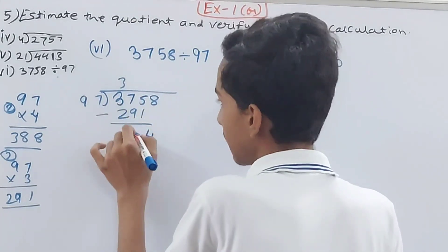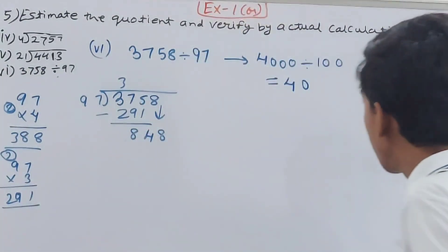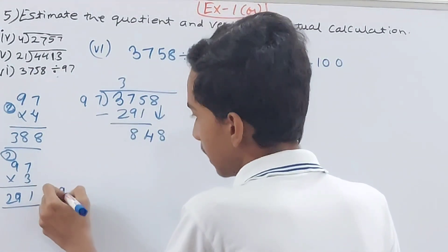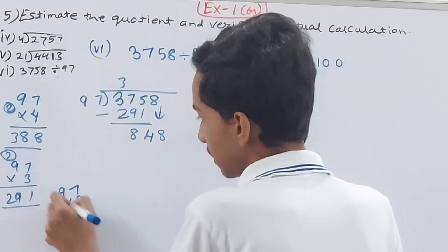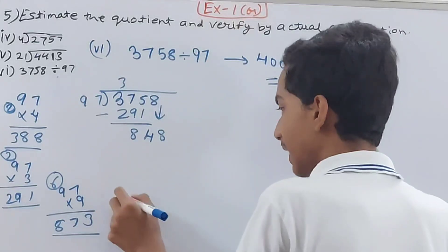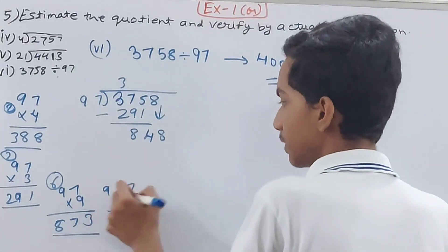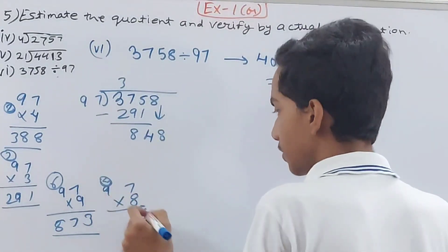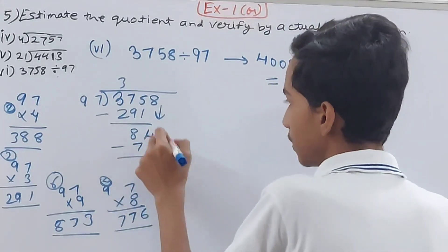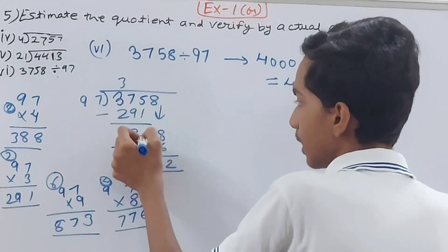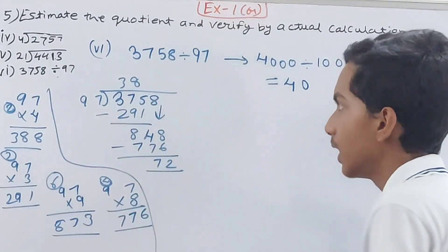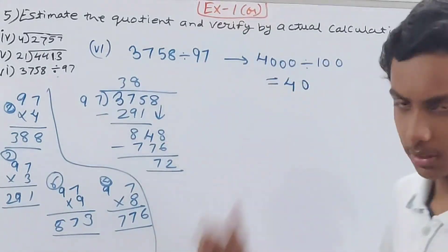So try 8 times — 8 sevens are 56 carried over 5, 8 nines are 72 plus 5 is 77, giving 776. Minus 776 from 848, remainder 72. 72 is less than 97 so we stop. Actual quotient is 38, estimated quotient is 40.